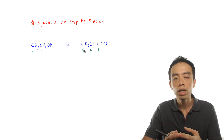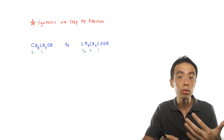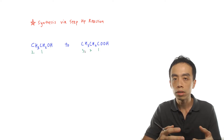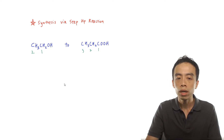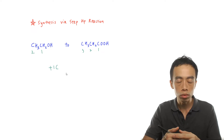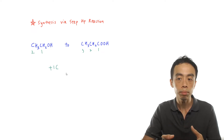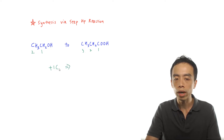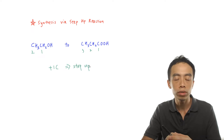So obviously what I will need to do is I will need to increase the number of carbon for this synthesis reaction. So because I know that I need to increase 1 carbon, then we know that this is a step-up reaction. So it is good to write this down — I need to add 1 carbon, so in terms of process, this is a step-up process.